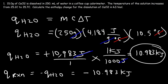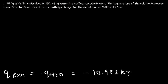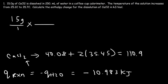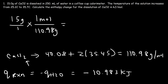Now we divide by the number of moles. We're dissolving 15 grams of calcium chloride, so we need the molar mass. Calcium has an atomic mass of 40.08 and chlorine is 35.45 — multiply by 2 based on the subscript. The molar mass of CaCl₂ is 110.98 g/mol. Dividing 15 grams by 110.98 g/mol gives us 0.13516 moles of calcium chloride.